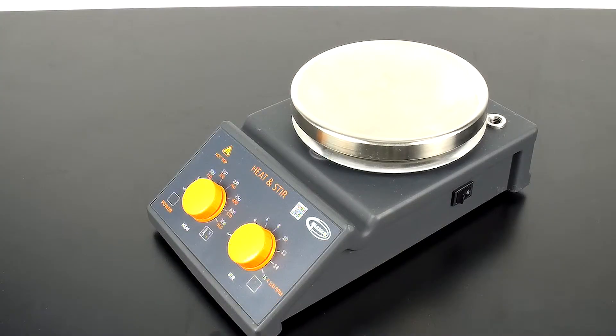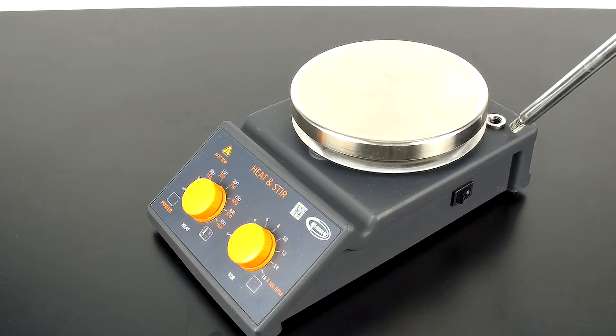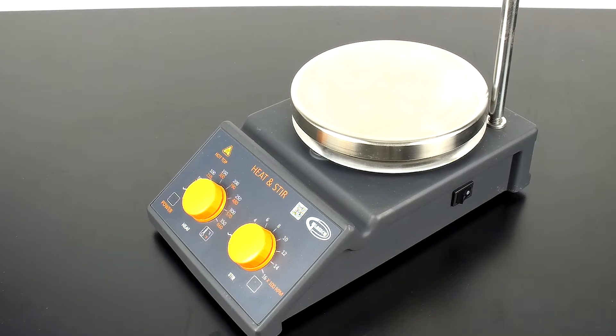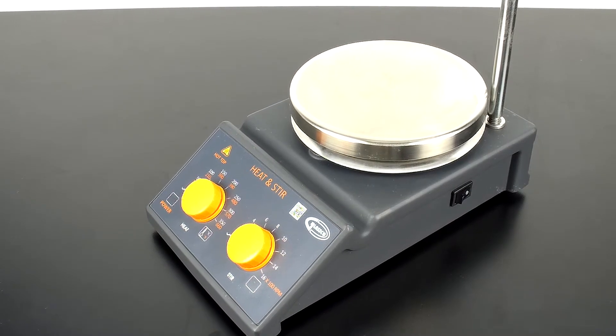One of the great additional features of this hot plate stirrer is this threaded hole in the back. This allows you to put a support stand onto this unit. So if you need to attach additional equipment, you can.